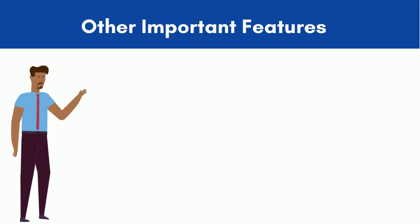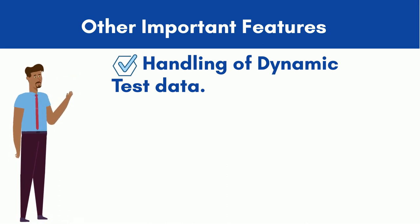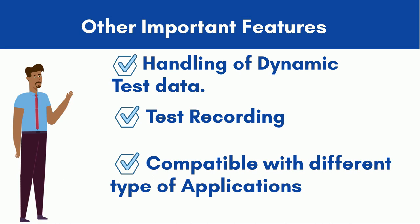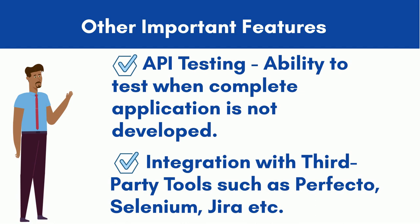Dynamic test data can be handled through Tosca features such as TCD, TDM, and TDS. The test recording feature allows testers to record and create test scenarios with a single click. Tosca is compatible with most applications such as Salesforce, SAP, web, PowerBuilder, .NET, mainframe, and mobile devices. API testing is very useful when the entire application is not ready but some components are developed. Tosca can test those components by following simple steps, and also integrates with third-party tools like Perfecto, Selenium, and qTest to enhance the scope of automation testing.